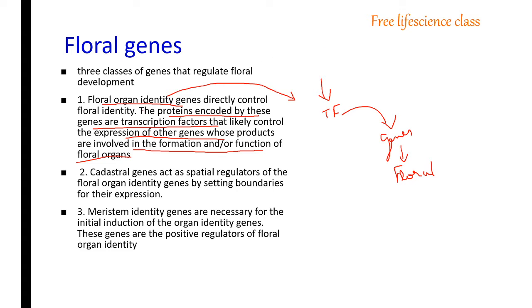The proteins encoded by the floral organ identity genes produce transcription factors that control other genes — specifically the expression of other genes whose products are involved in the formation and function of the floral organs.